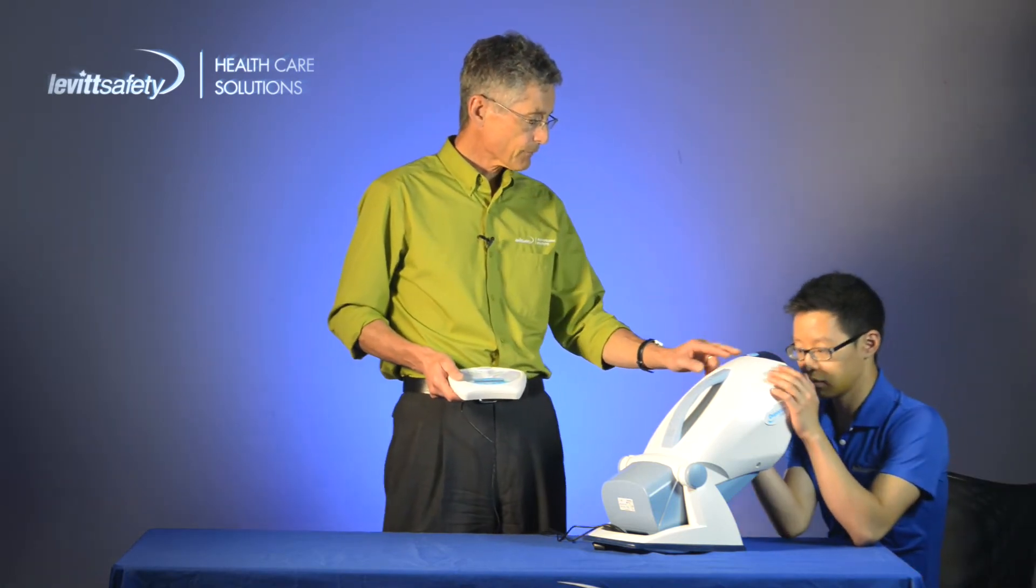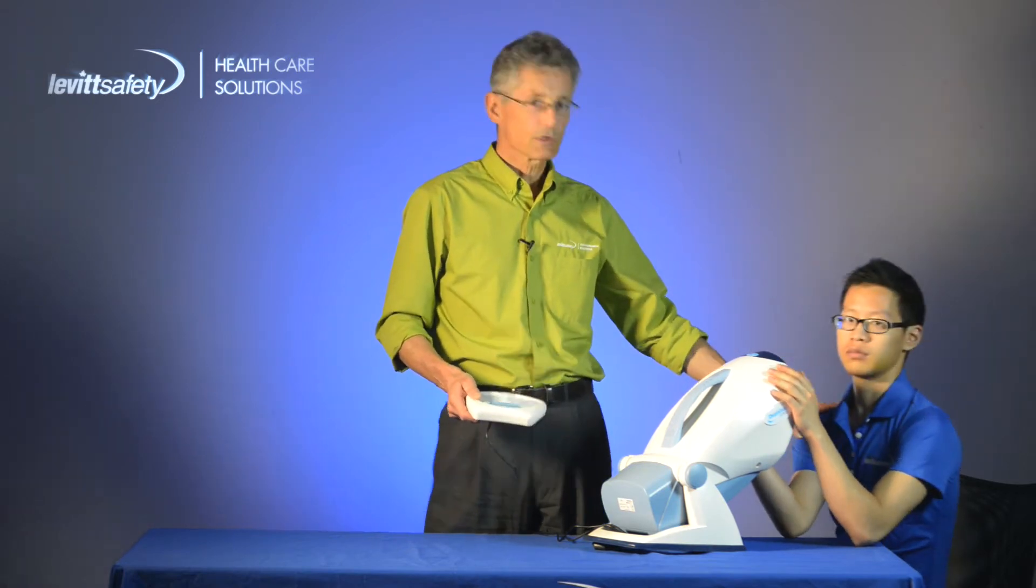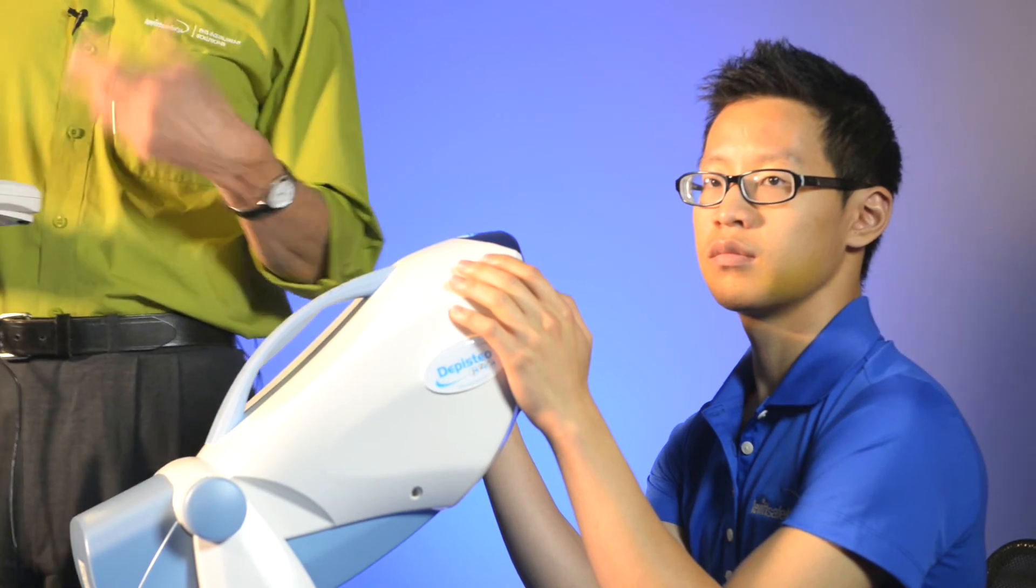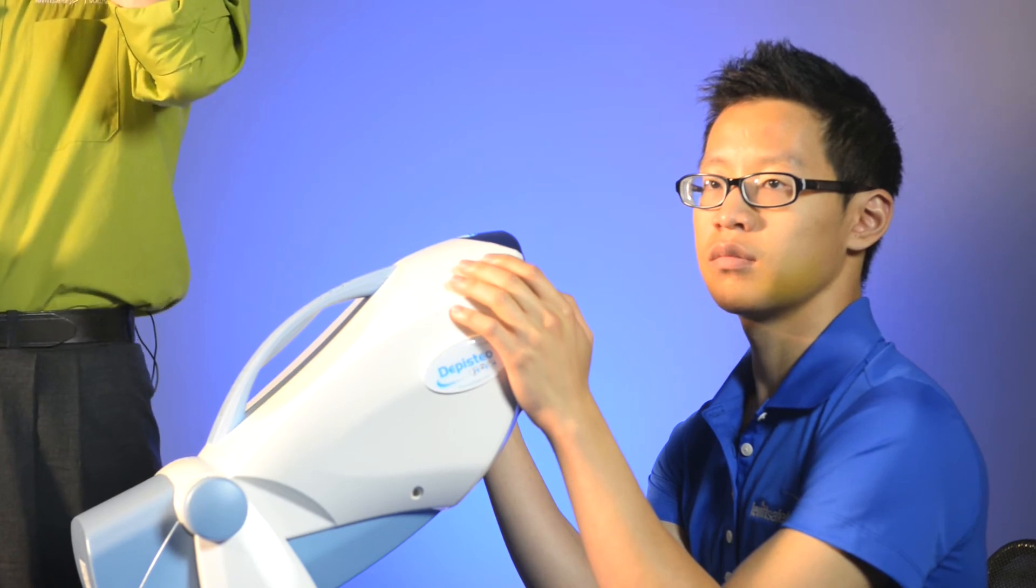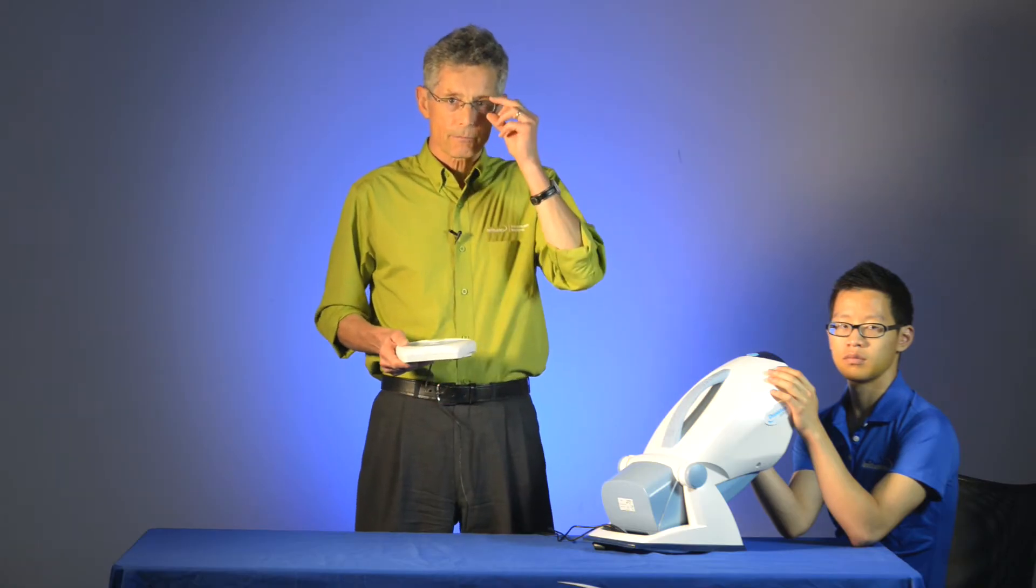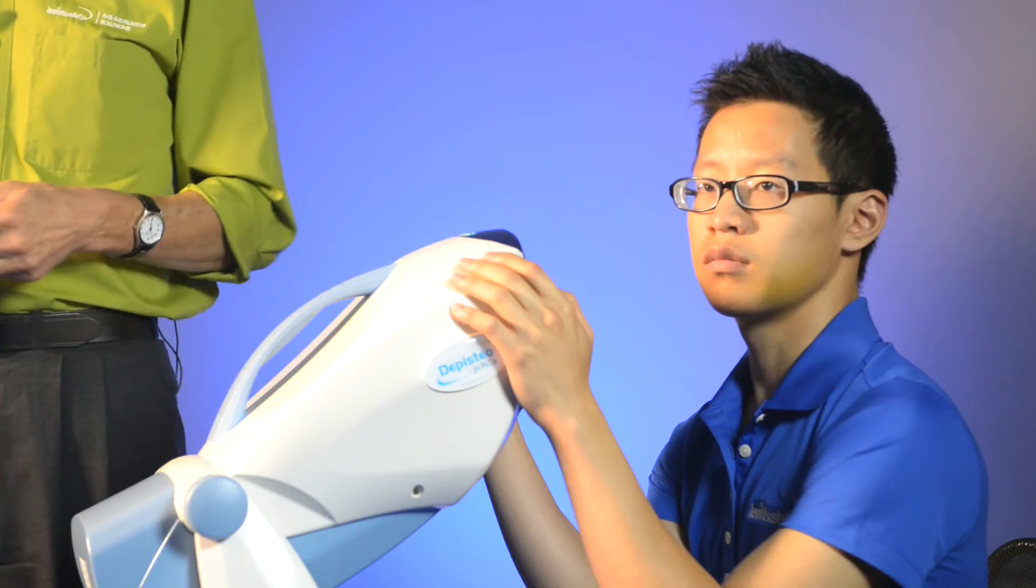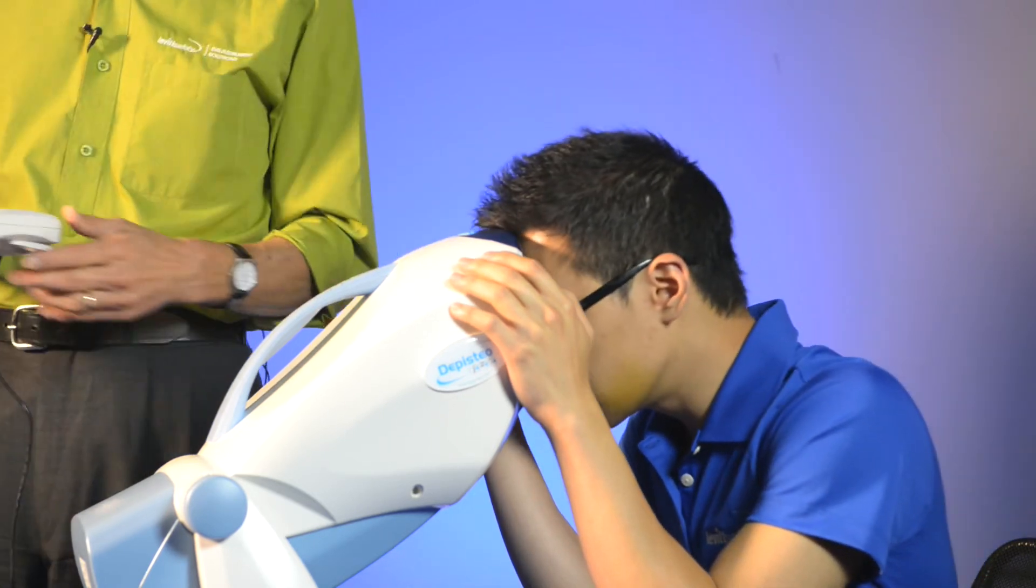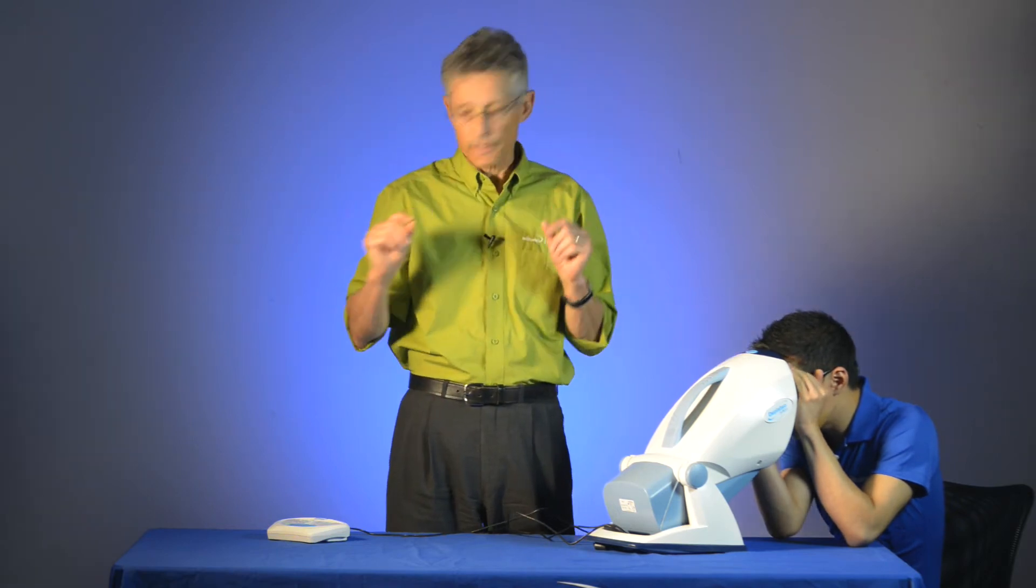I'd like you to have both eyes open and look into the device. Now, just back up for a second. You'll notice Jonathan wears glasses. So if the person being tested normally wears glasses, this is the way you should do the test. If they normally wear contacts, then the contacts should be in place. If they wear bifocals like I do, then wear the bifocals but look through the long vision side of the bifocal. So again, Jonathan, both eyes open and just put your head into the device and look through the top set of lenses with both eyes open.